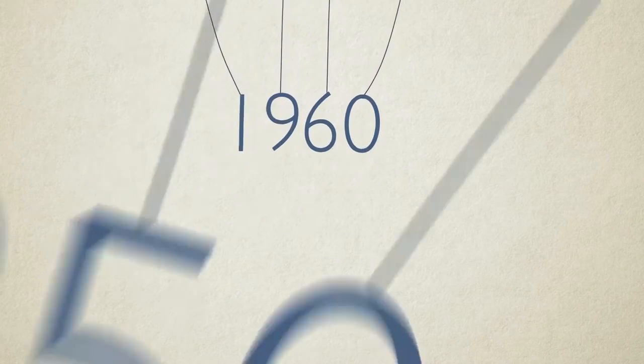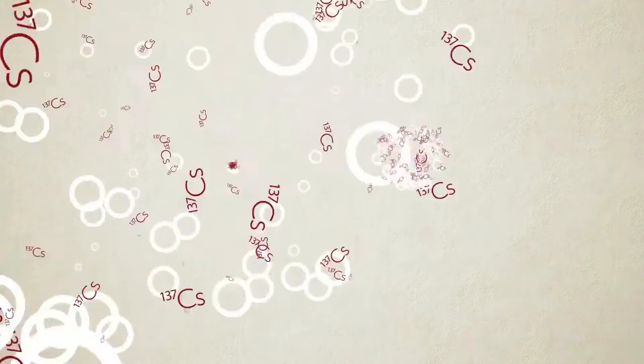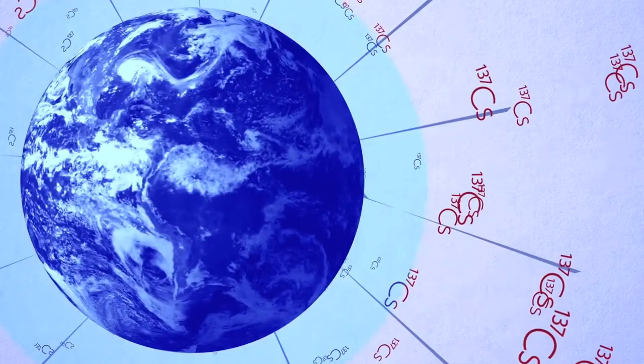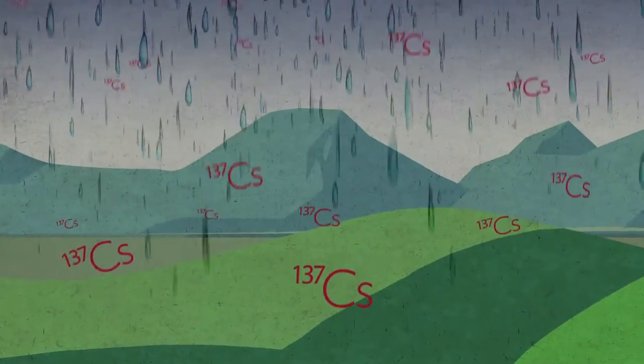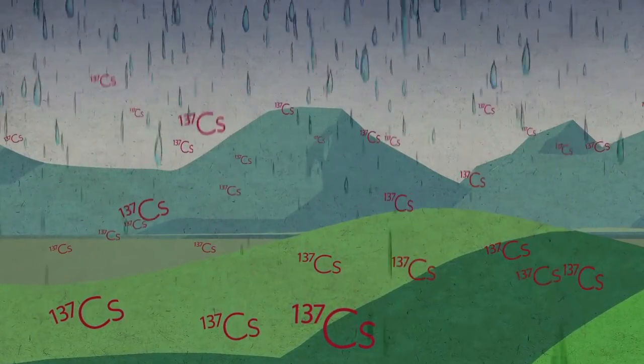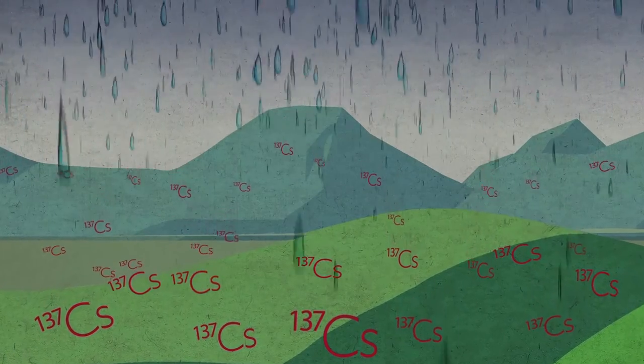Nuclear testing in the 1950s and 60s released radionuclides such as cesium-137 into the atmosphere in extremely low but measurable quantities. Over time, through precipitation, cesium fallout was deposited worldwide on the soil's surface.